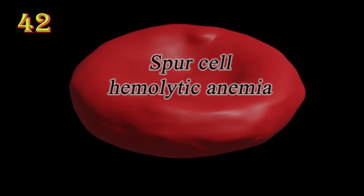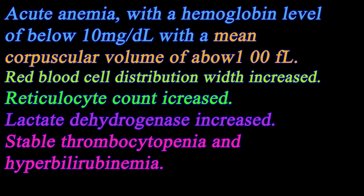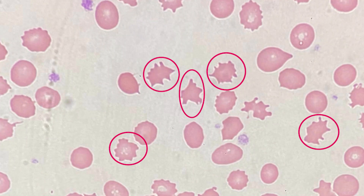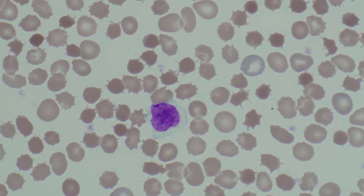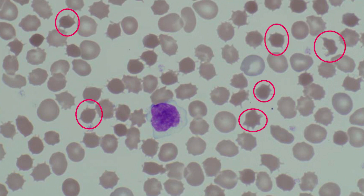Spur cell hemolytic anemia: due to chronic liver disease impairing the liver's ability to esterify cholesterol, free cholesterol binds to the red cell membrane, increasing its surface area without increasing its volume. This condition also creates rough, thorny projections on the erythrocyte called acanthocytes.